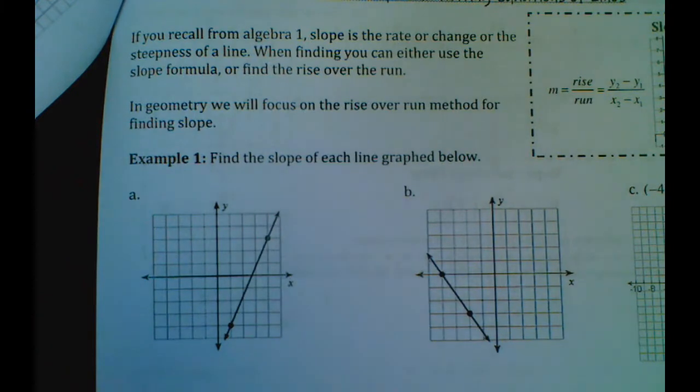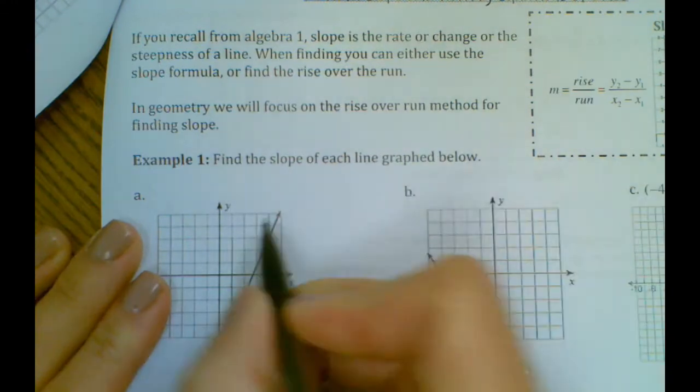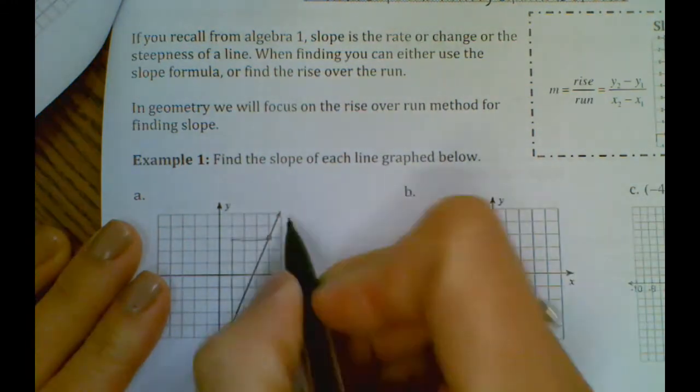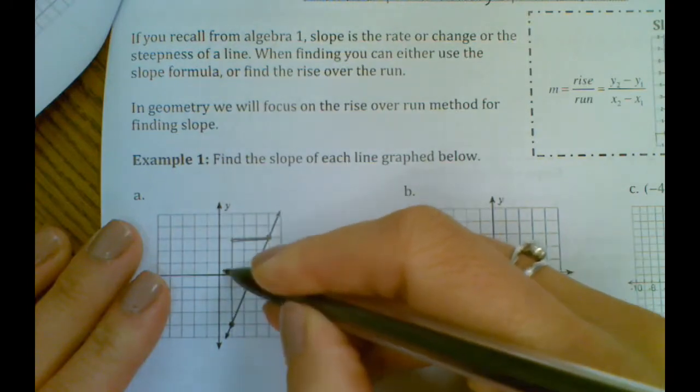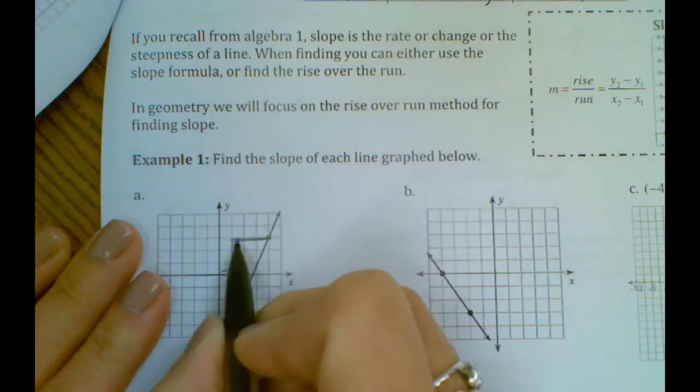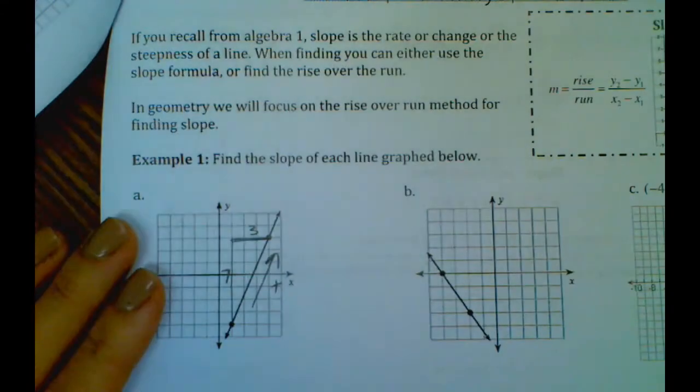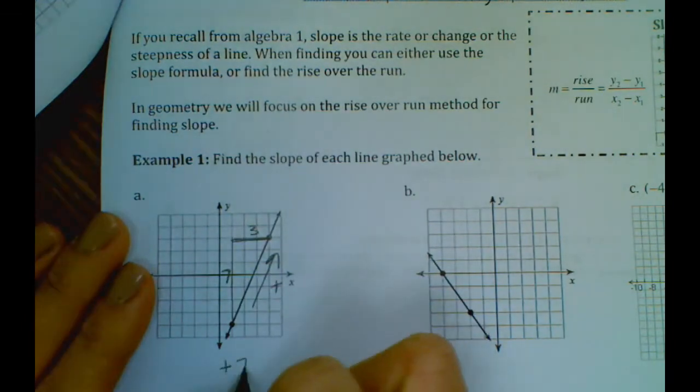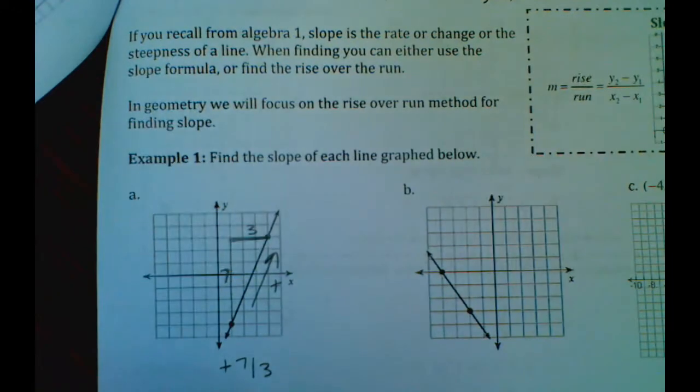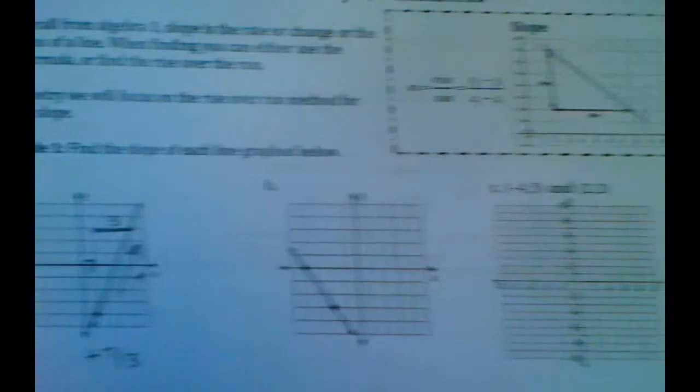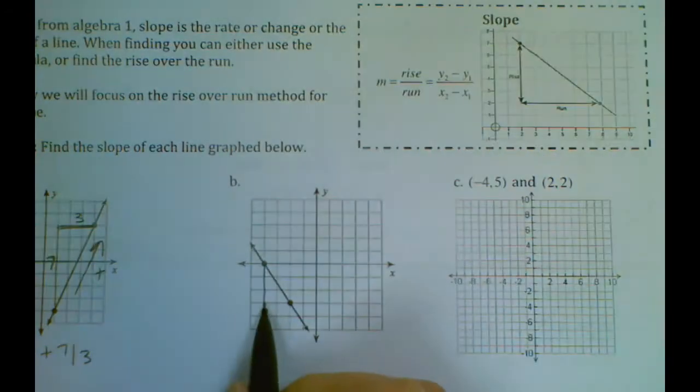To do rise over run, we use what some people call the stair step method. So from point one to point two, we would do a rise of one, two, three, four, five, six, seven, with a run of one, two, three. This line is going up from left to right, meaning this is a positive slope of seven over three. So the rise of seven and the run of three gives us a slope of positive seven-thirds.